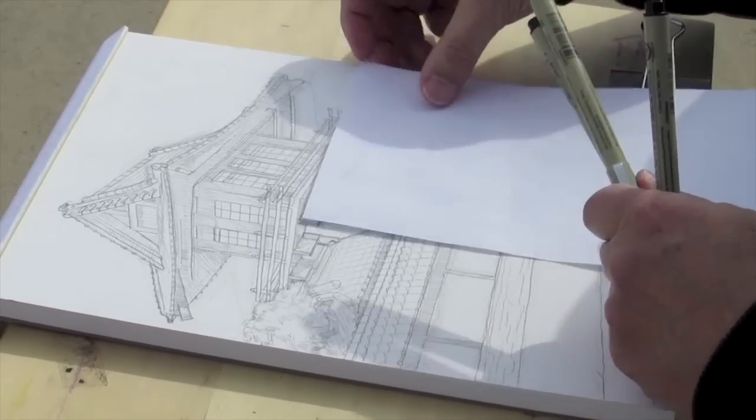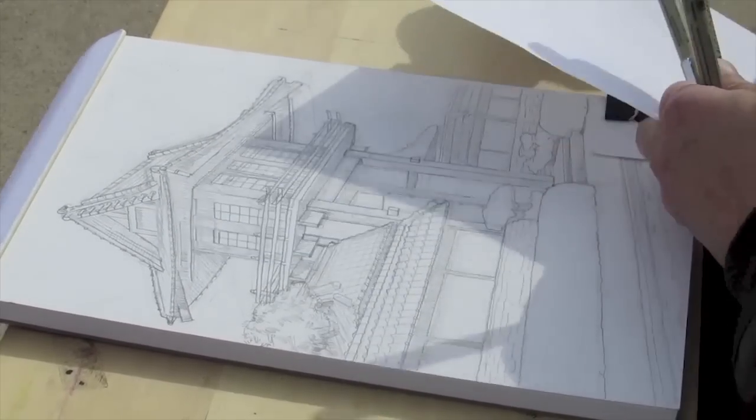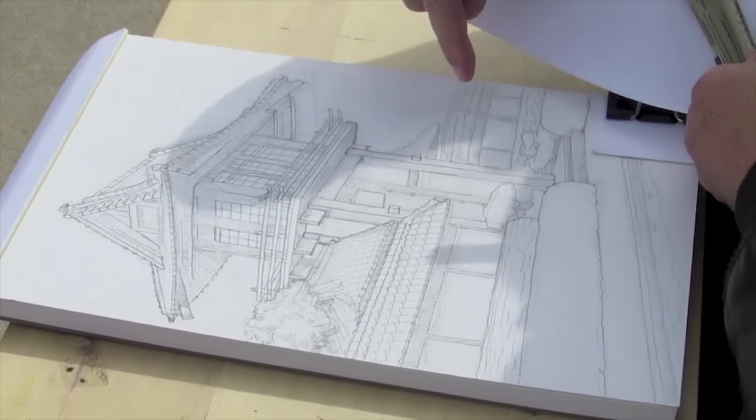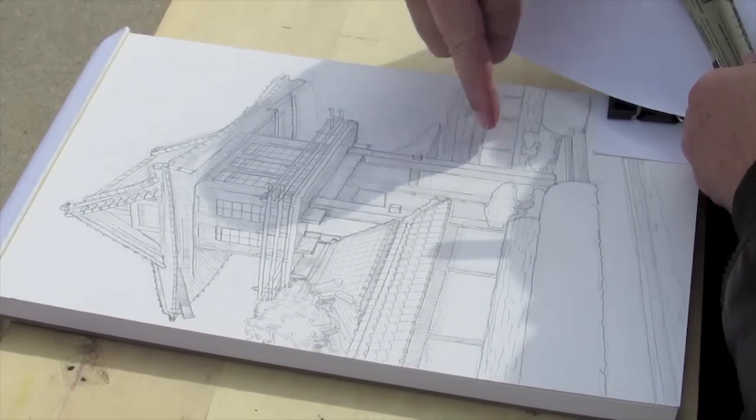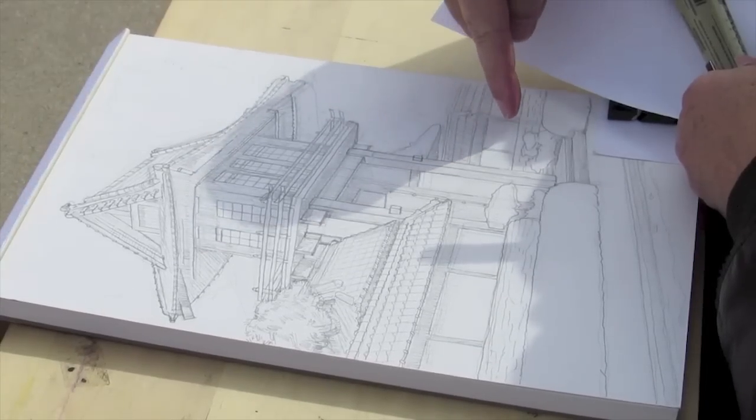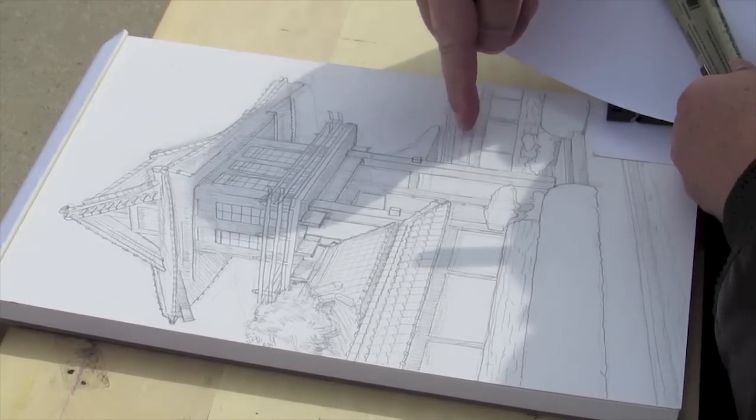I'm going to reserve the O2 and O1 for those areas of the drawing that are closest to me. I'll switch over to the O5 for the areas of the wall and gatehouse that are a bit farther back in the middle ground.